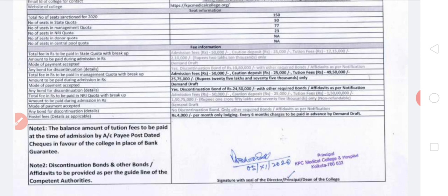Now coming to the management quota fees. The admission fees is the same as state quota: ₹50,000. Caution deposit is ₹25,000. But the tuition fee here differs — the entire tuition fee is ₹49,50,000. This is not paid semester-wise. The amount to be paid during admission is ₹25,75,000, and the mode of payment should be demand draft.